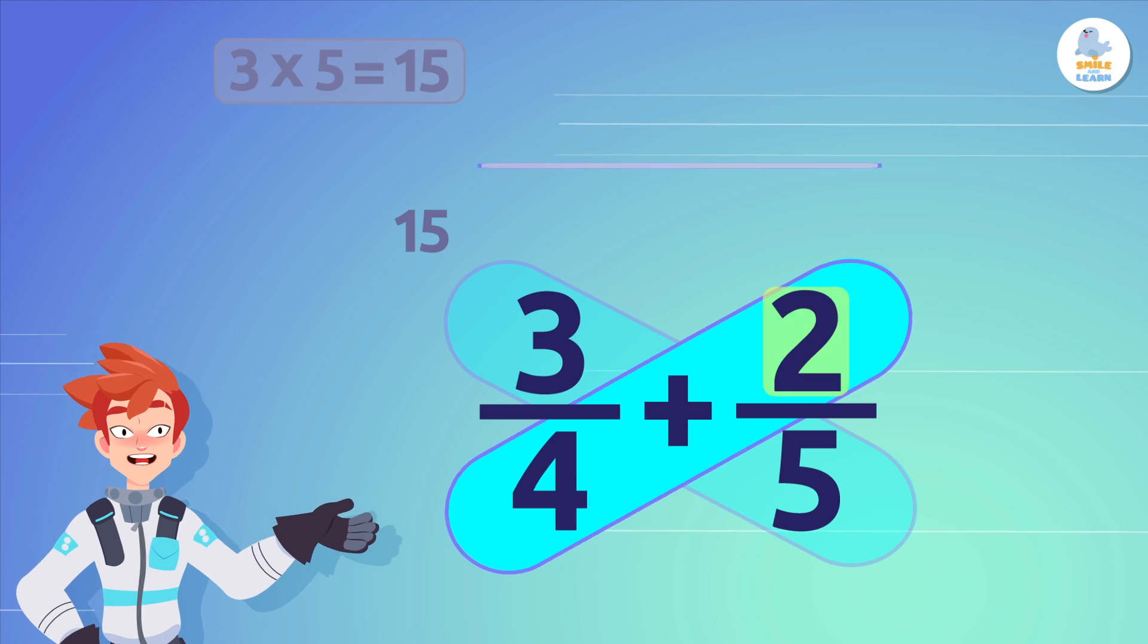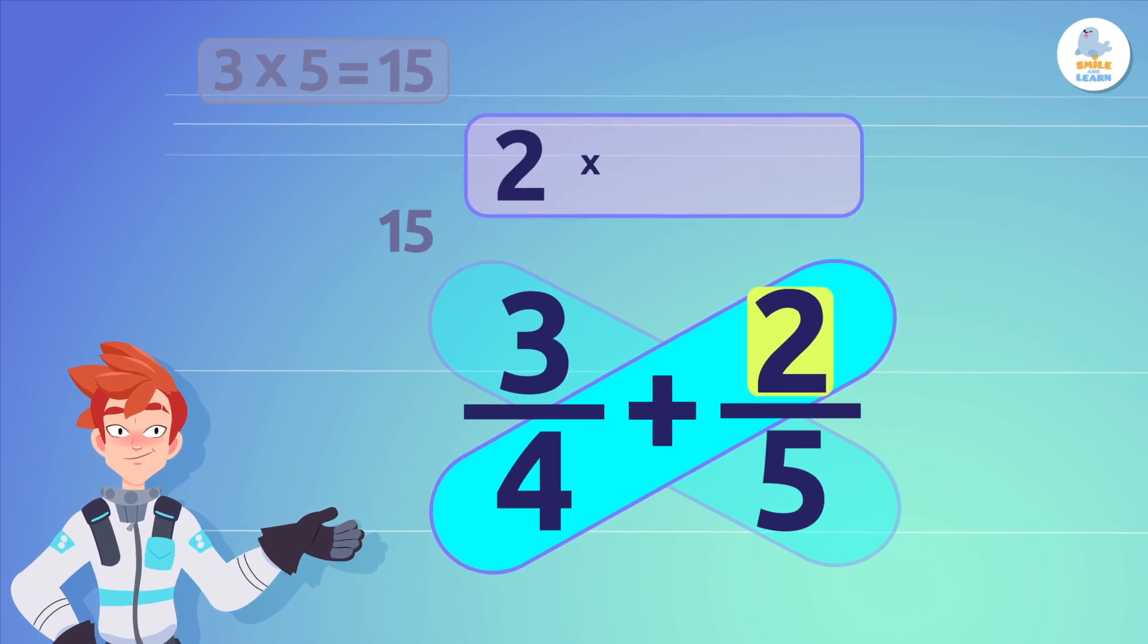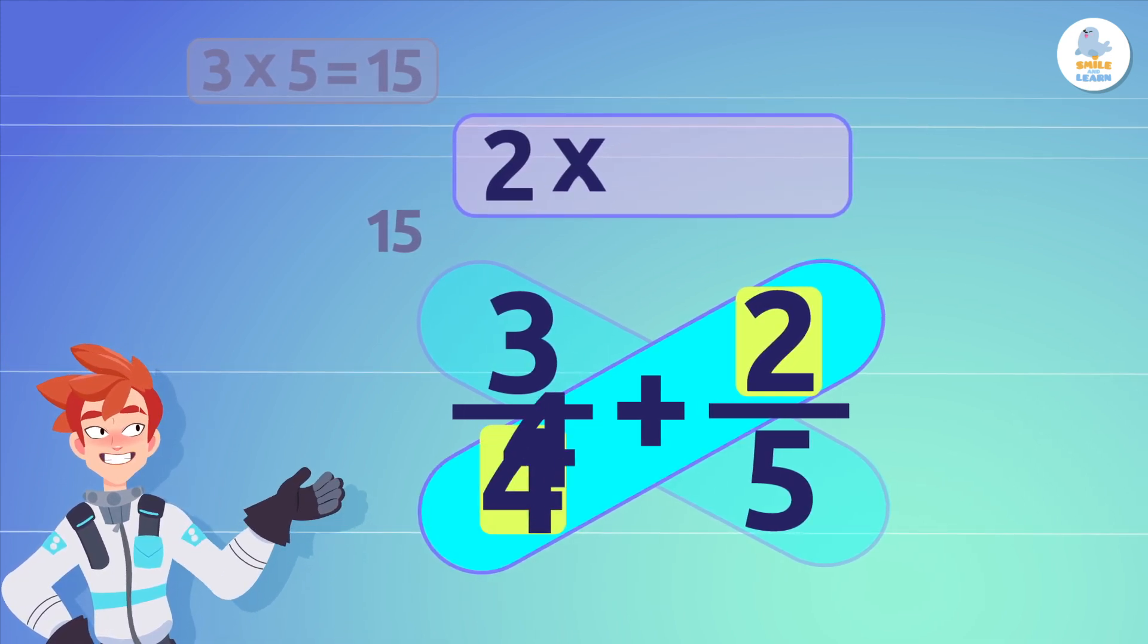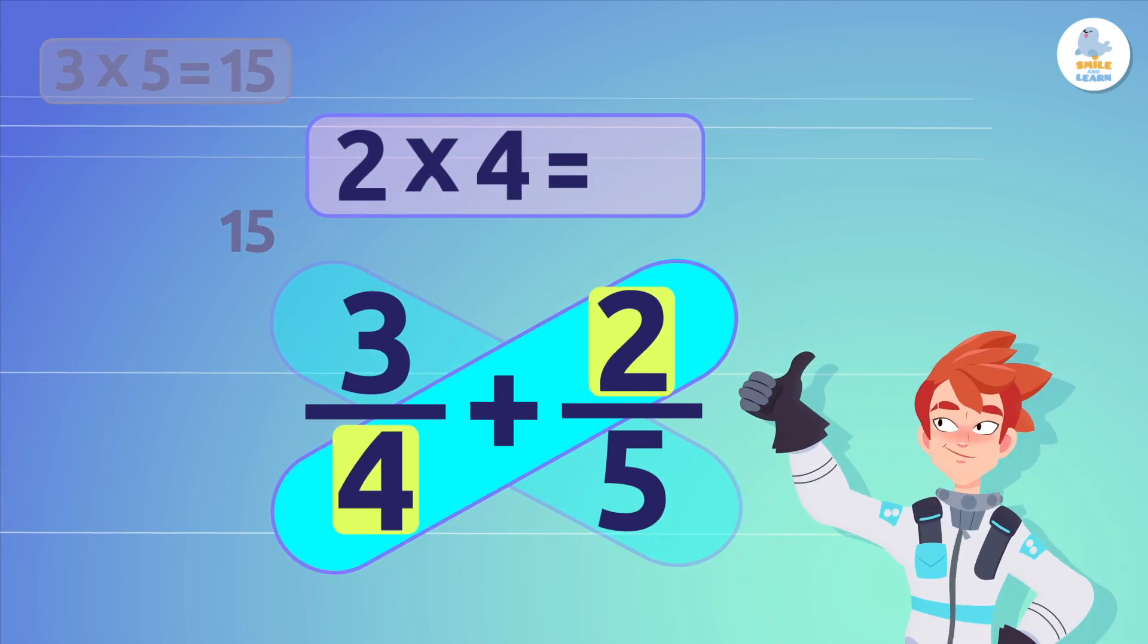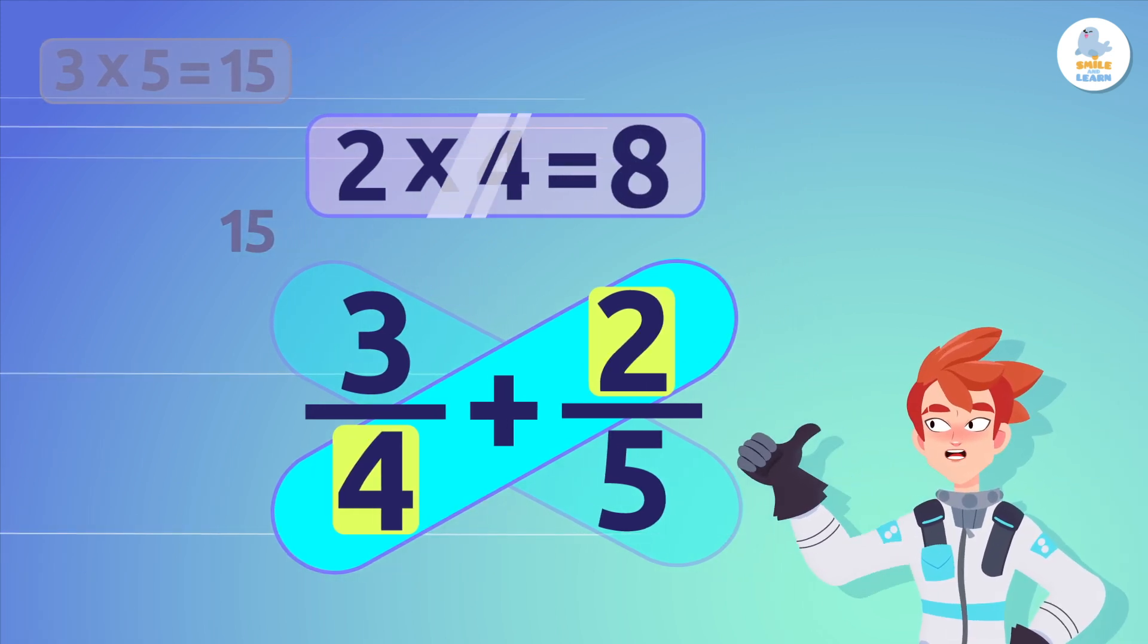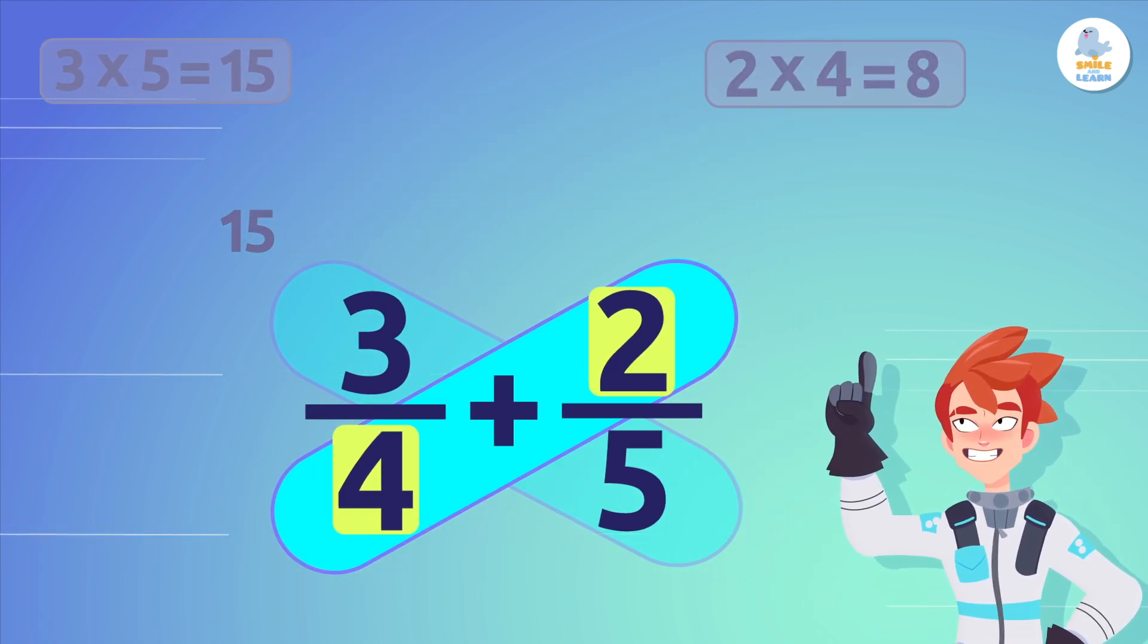Now, find the numerator of the second fraction, 2, and multiply it by the denominator of the first fraction, 4. The result is 8! We'll write it down here.